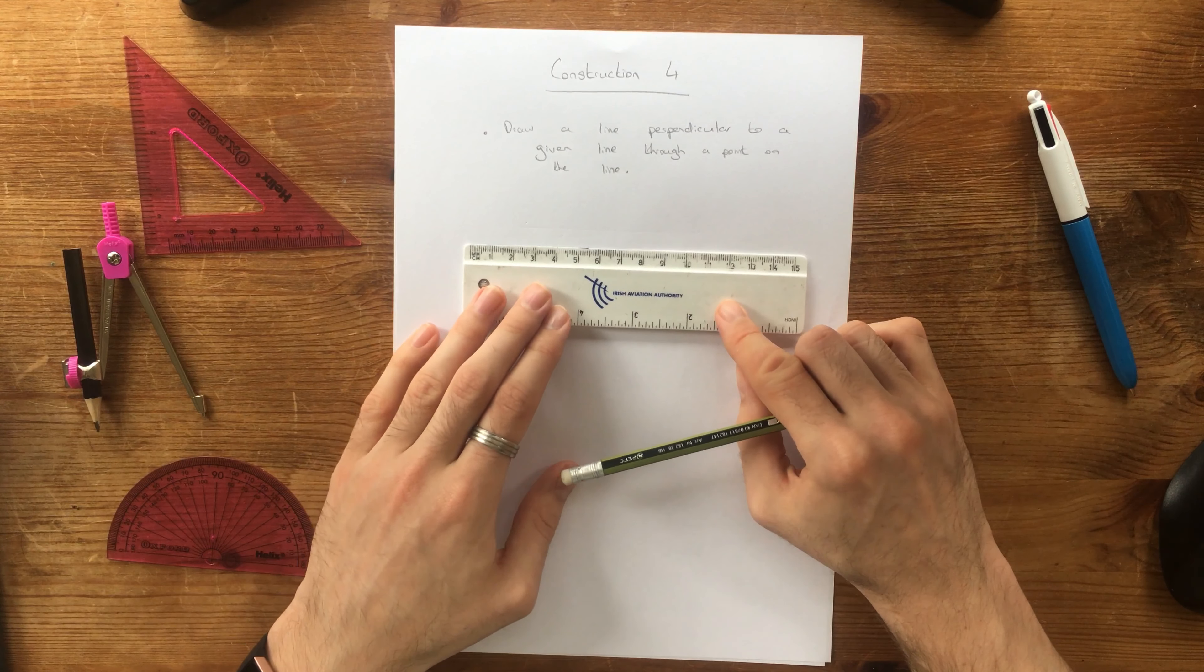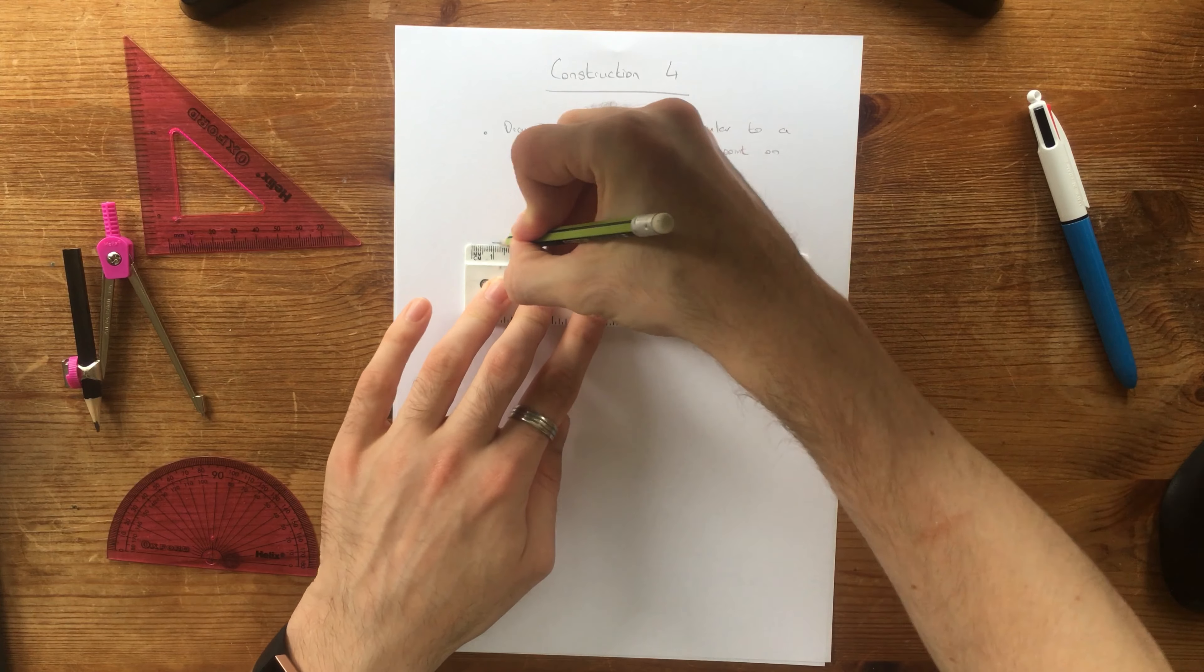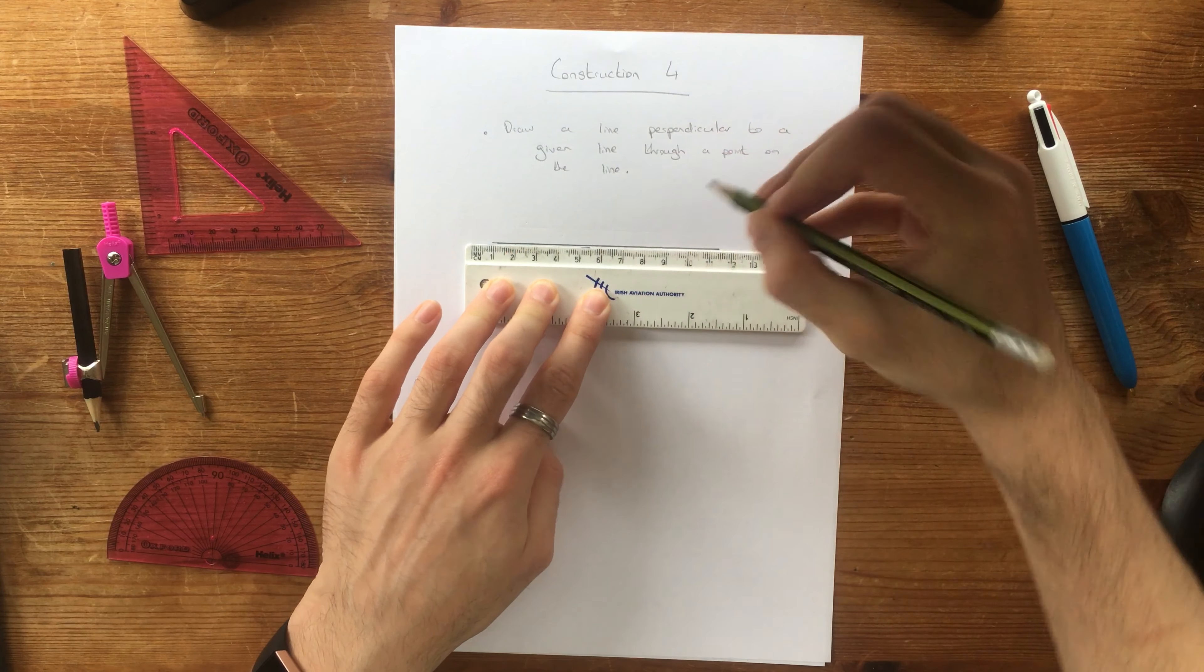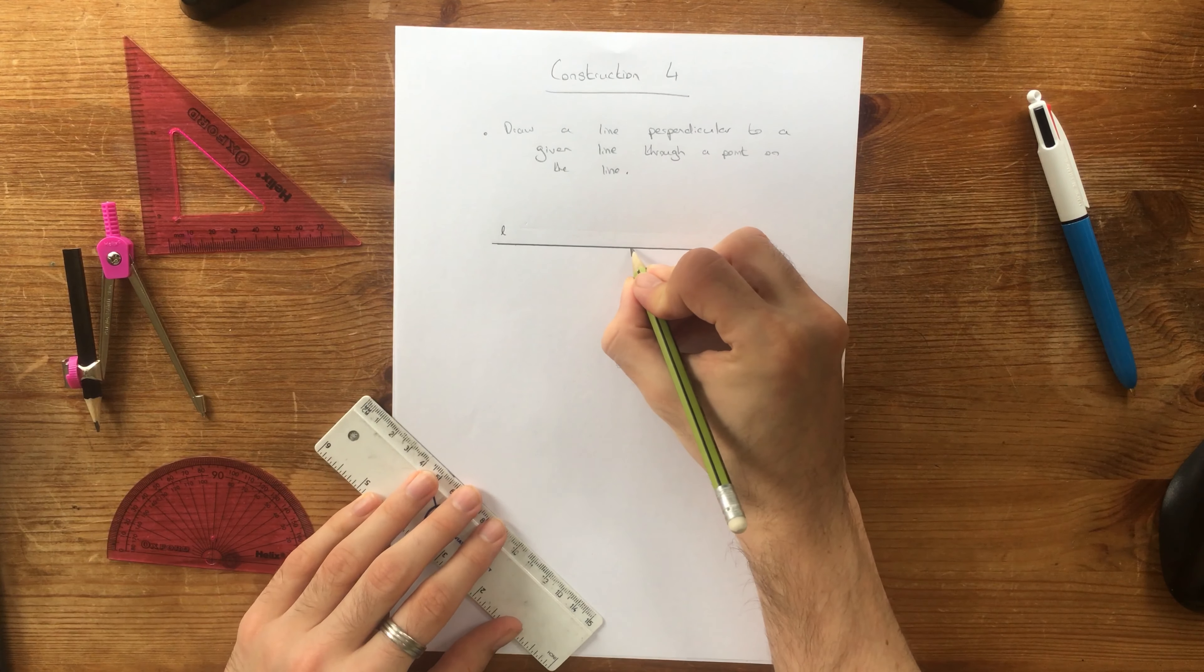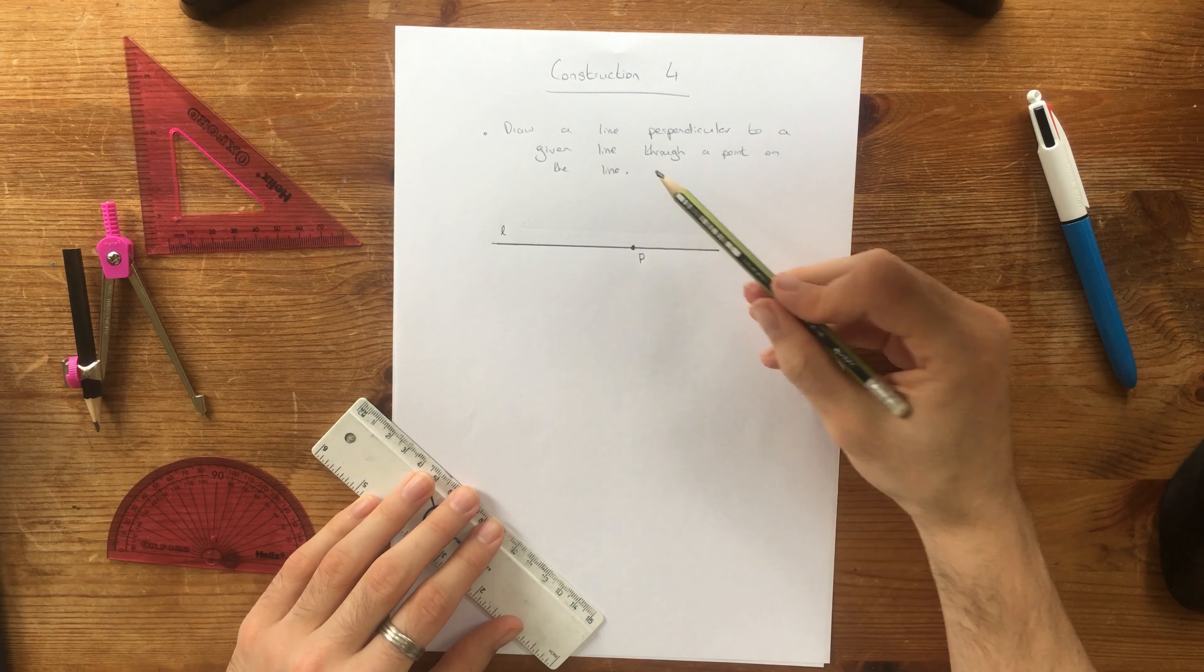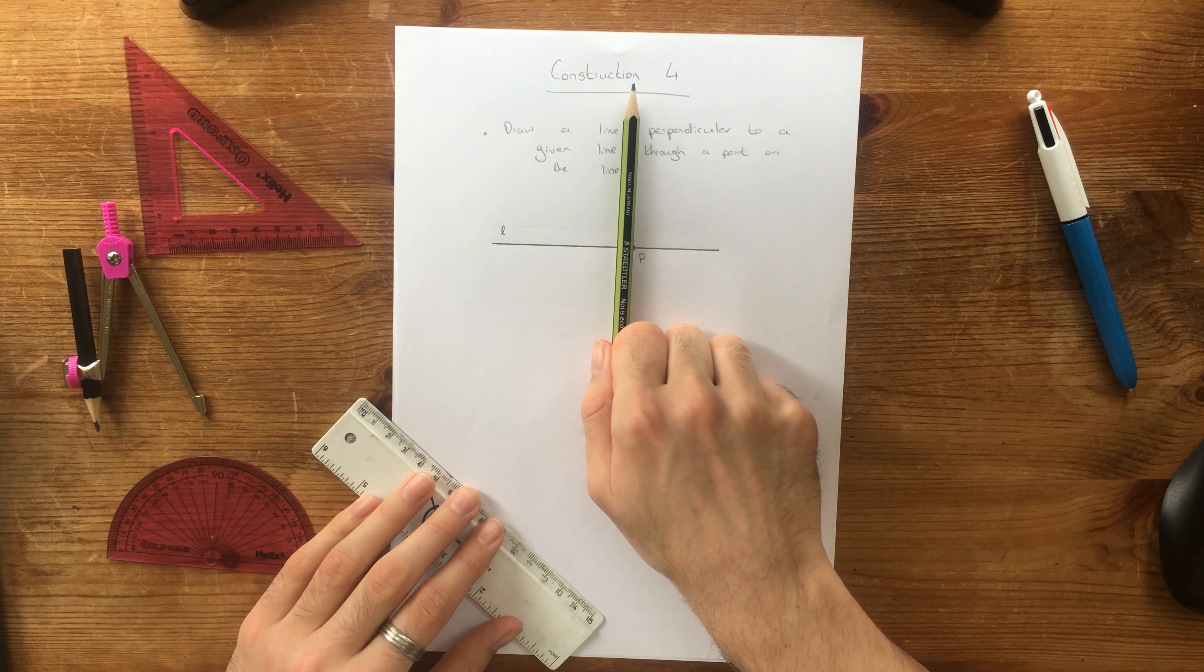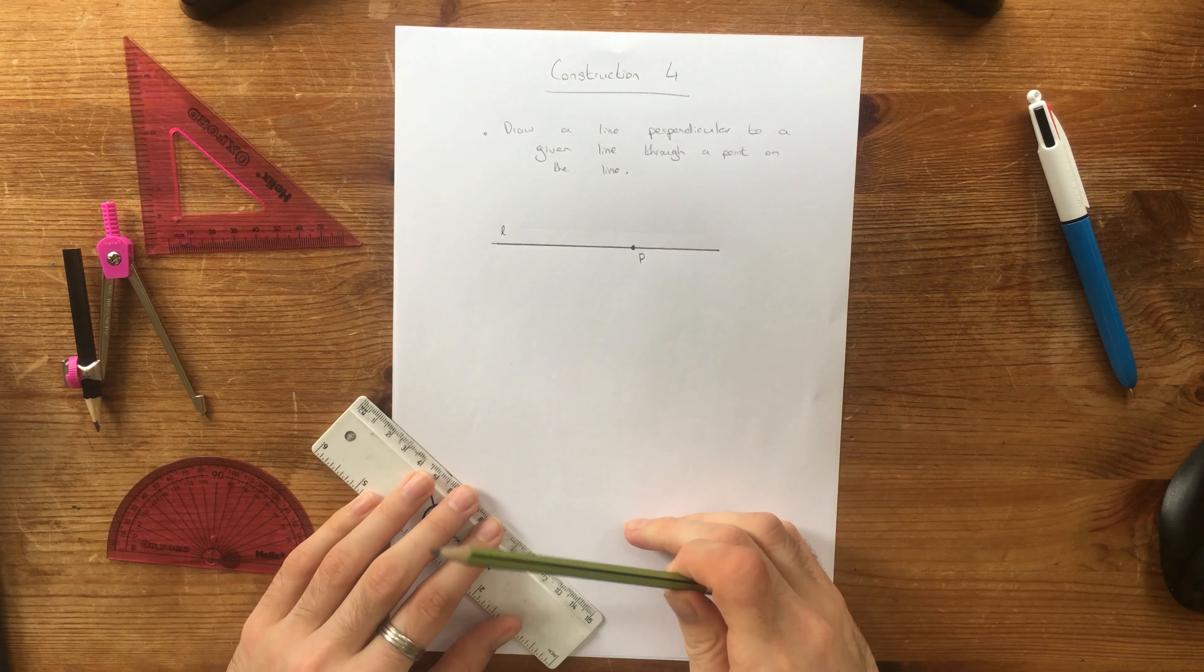So let's draw our line first. So all this means is we have some line, let's call the line L. And we have a point somewhere on the line, call it P, the point P. Now all we want to do is draw a perpendicular line, so a line that goes up at a right angle or a 90 degree angle from this given line through that point.